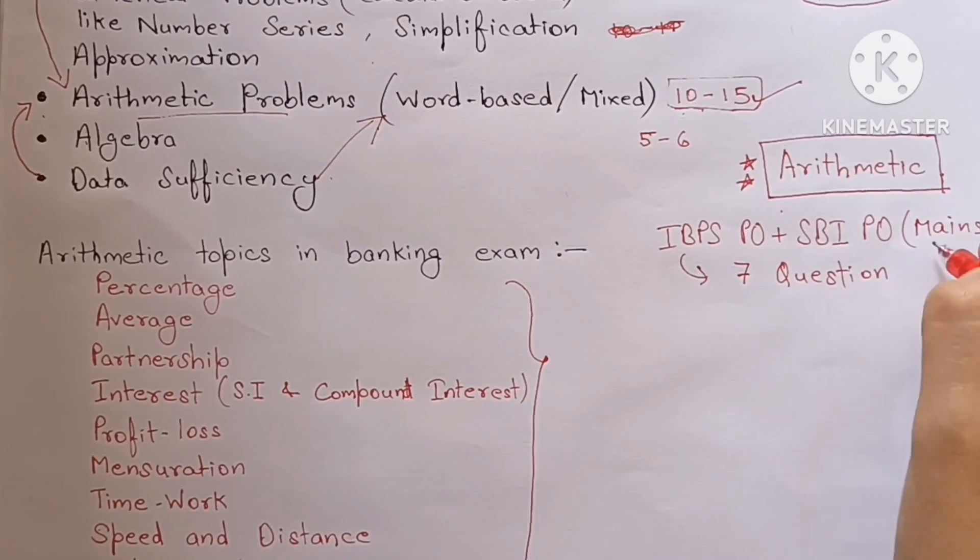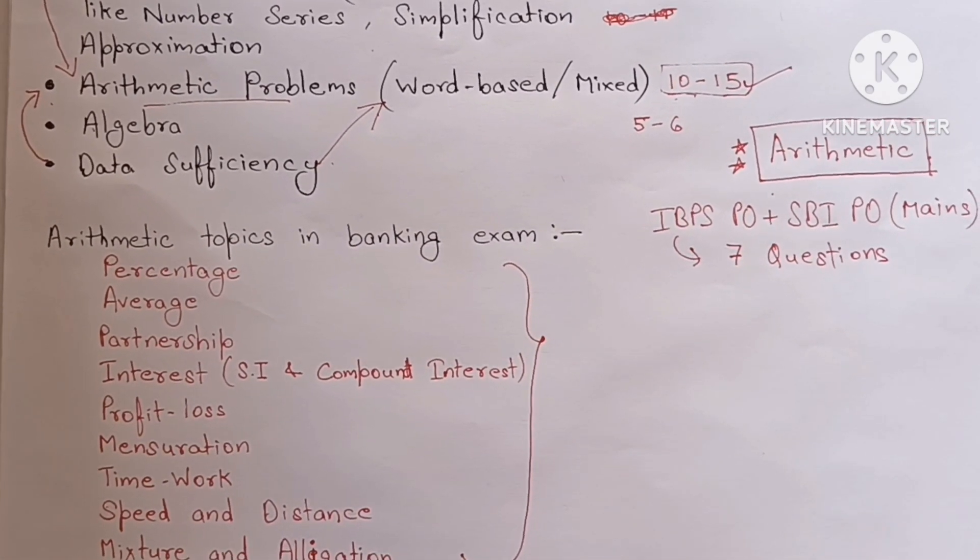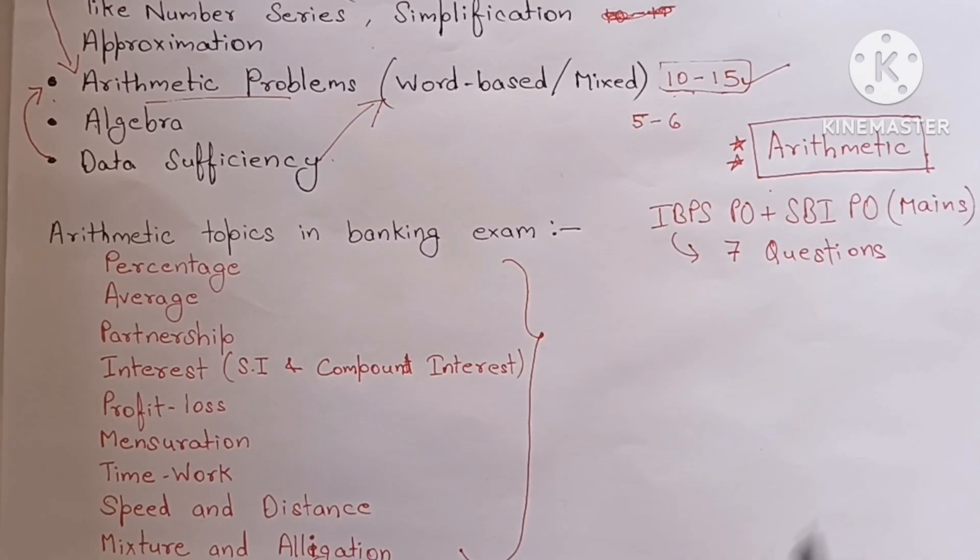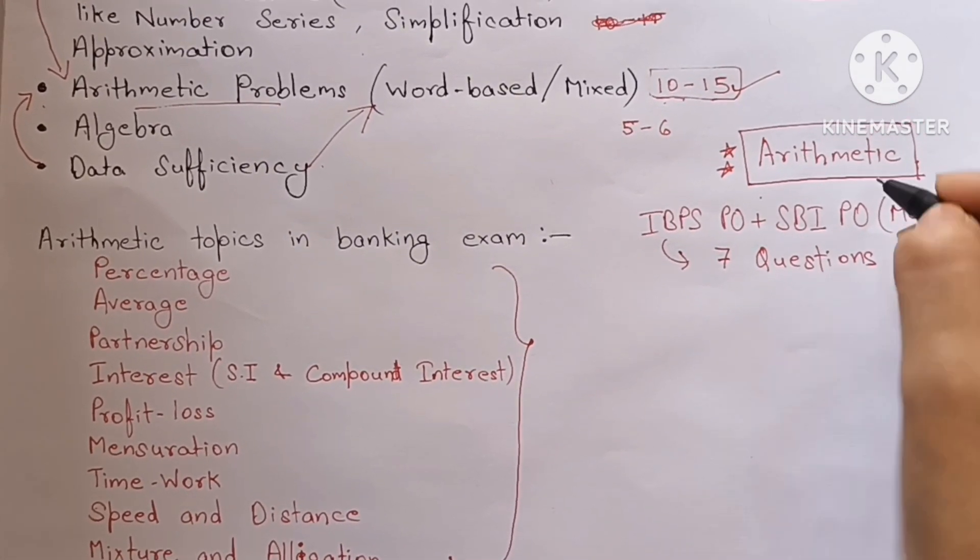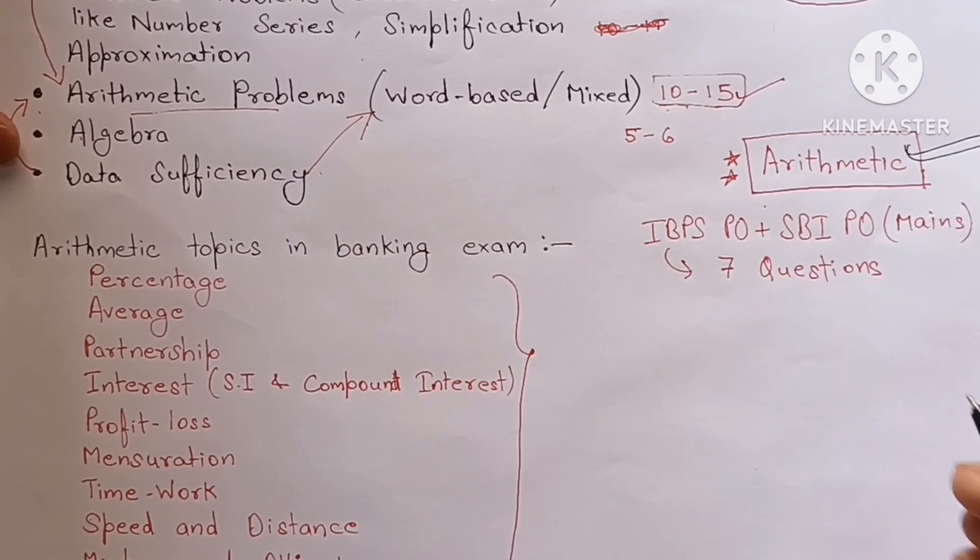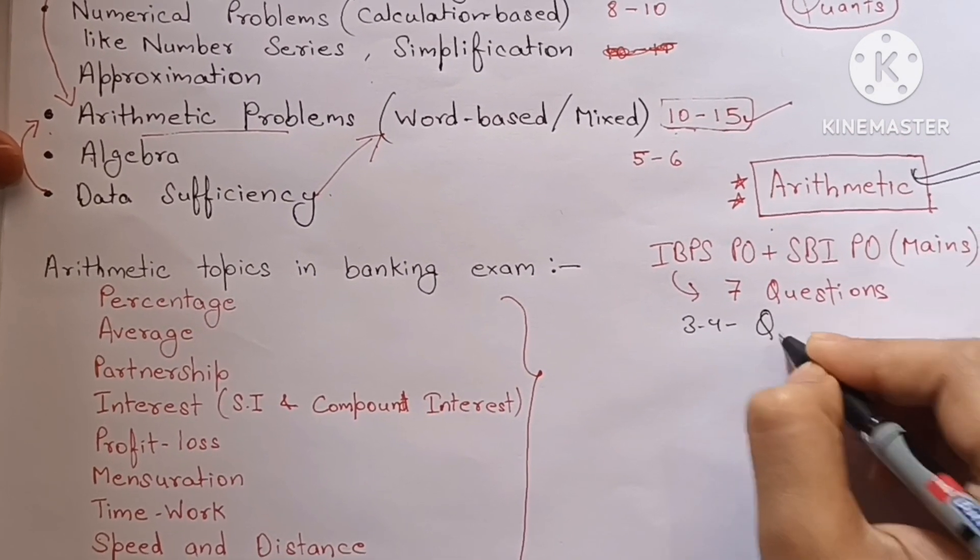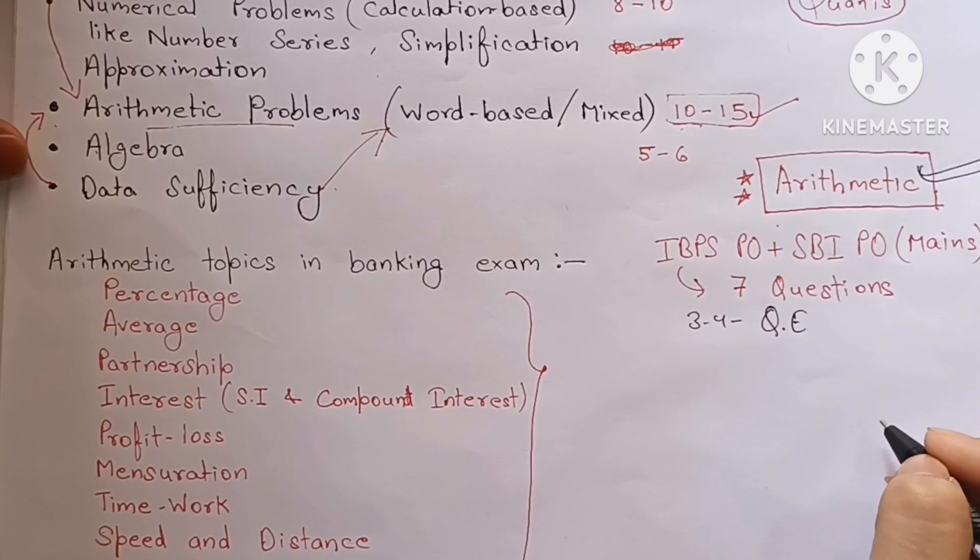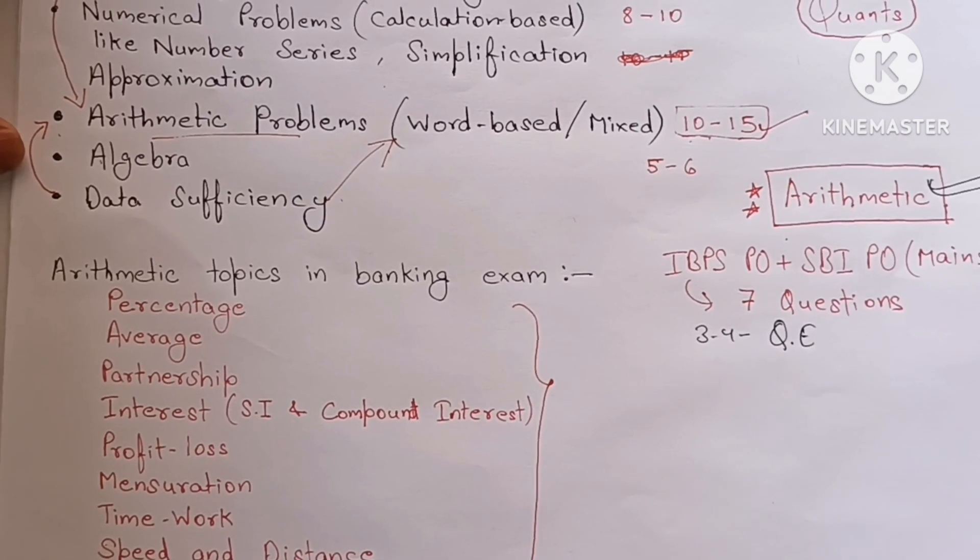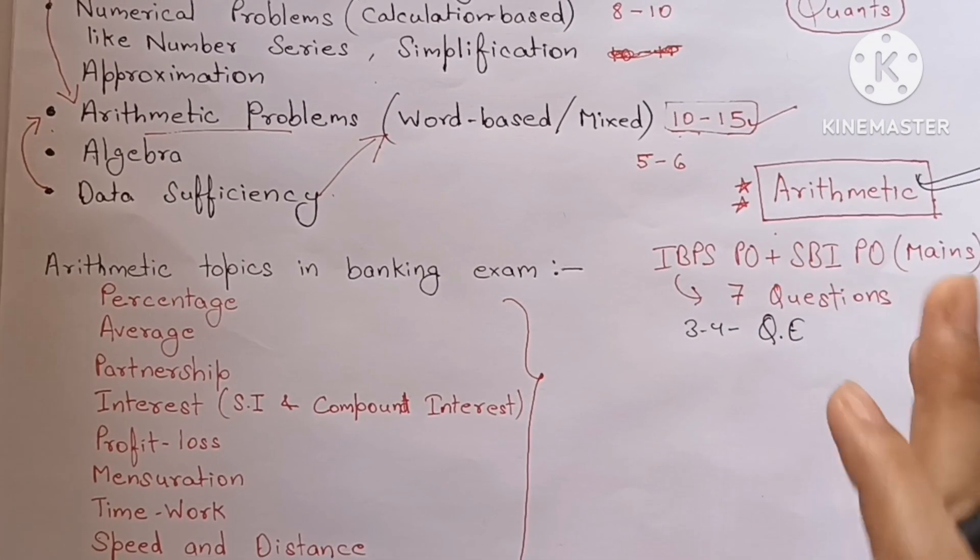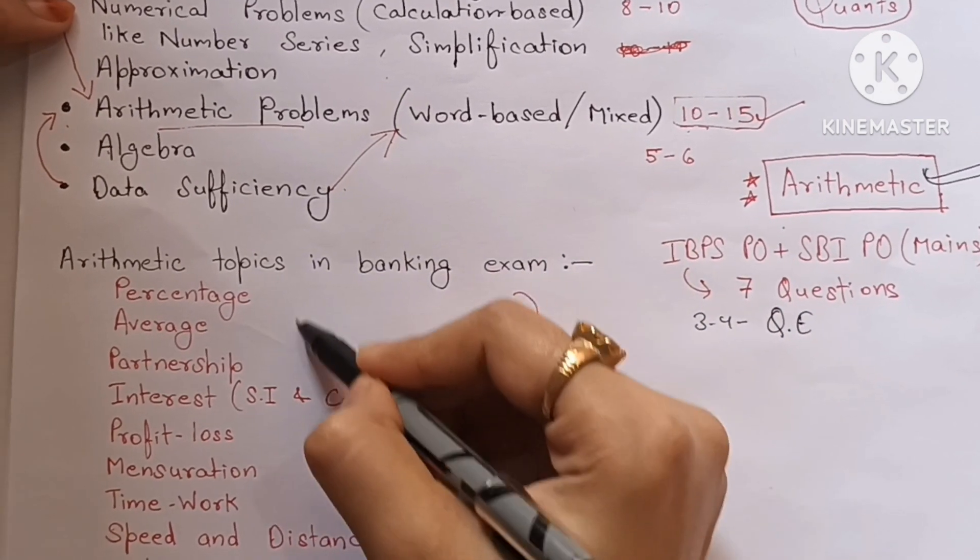So in that scenario I attempted seven questions in both IBPS PO mains as well as SBI PO mains, and that was just because of arithmetic. Because DI was really hard, so I attempted three to four arithmetic questions and two-three quadratic equations questions in one of those exams, and in the other I attempted arithmetic questions. So this is the importance of arithmetic - that if you complete the topic, it is going to really help you.